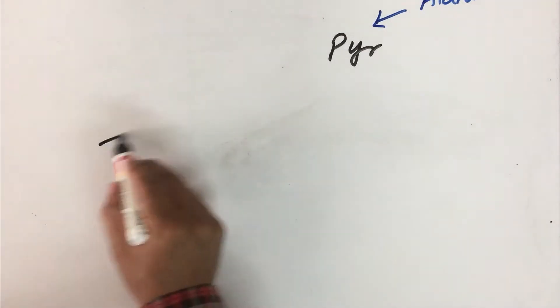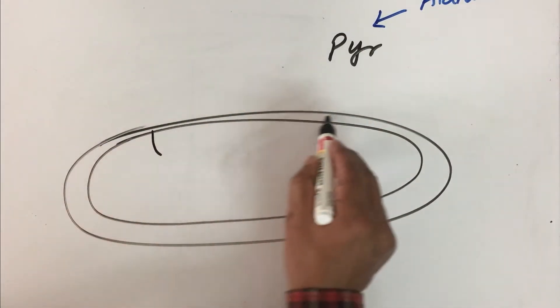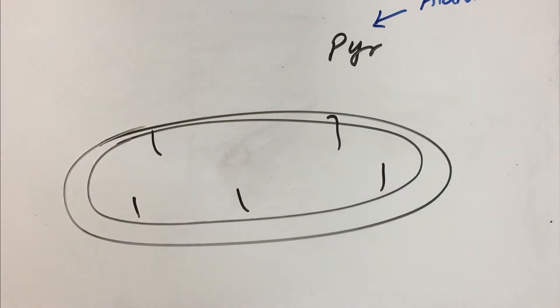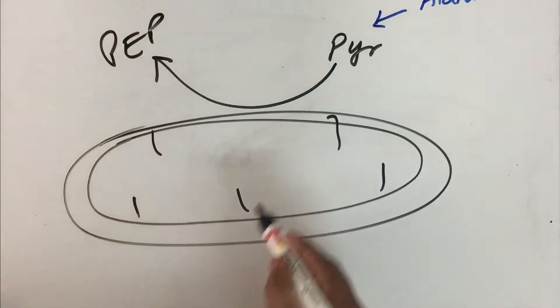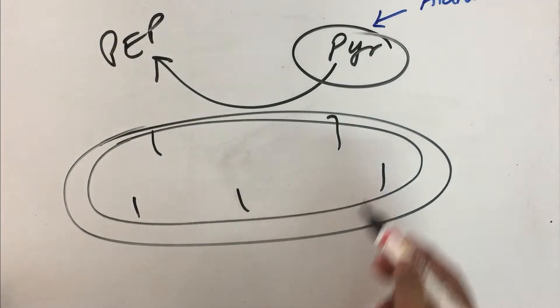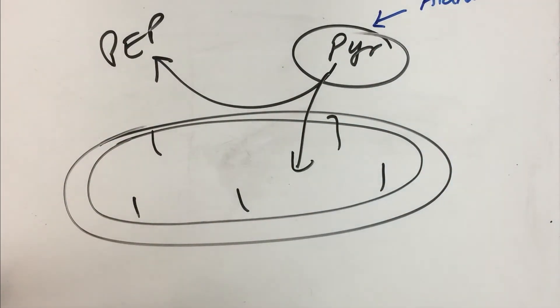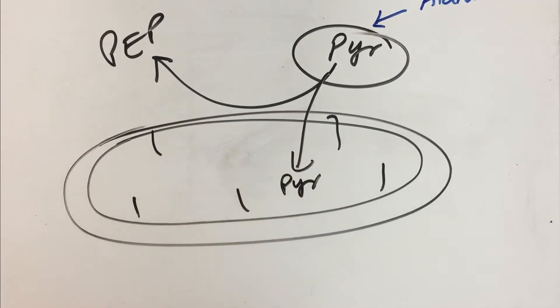In order to have finer control of this mechanism, we will use the concept of compartmentalization. Most of the reactions of gluconeogenesis will occur in the cytoplasm, but there are steps that take place in the mitochondria. The first bypass reaction of gluconeogenesis will occur in the mitochondria.